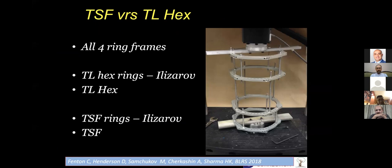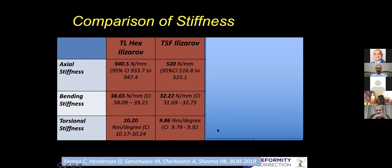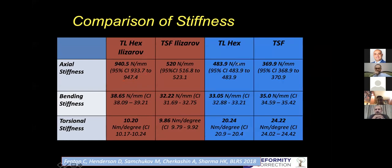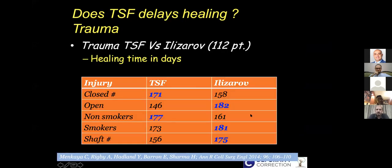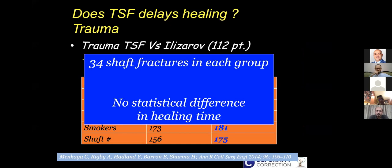We tested TL-Hex versus TSF, designing a four-ring frame, testing Ilizarov frames reconstructed using TSF and TL-Hex rings, and also testing the hexapods. TL-Hex is significantly stiffer than the TSF Ilizarov in axial loading, with a little more in bending, but not much difference in torsion. Comparing the hexapods, TL-Hex is a bit stiffer than TSF, but in bending and torsion there is not much difference between the two hexapods. Regarding bone healing: looking at 112 patients comparing TSF and Ilizarov — 34 shaft fractures in each group — there was no statistical difference in healing time.